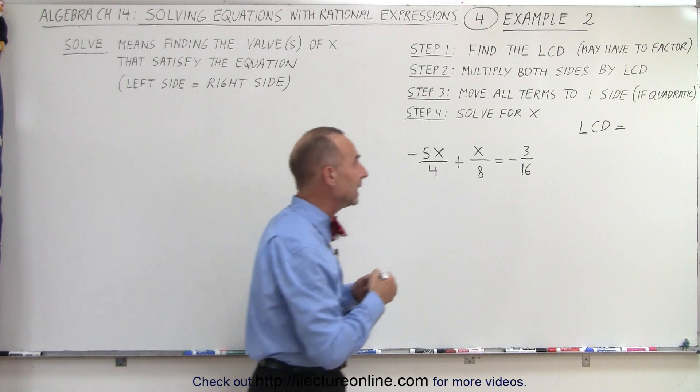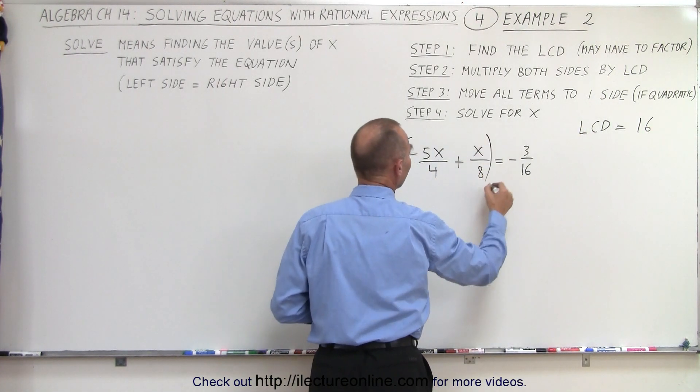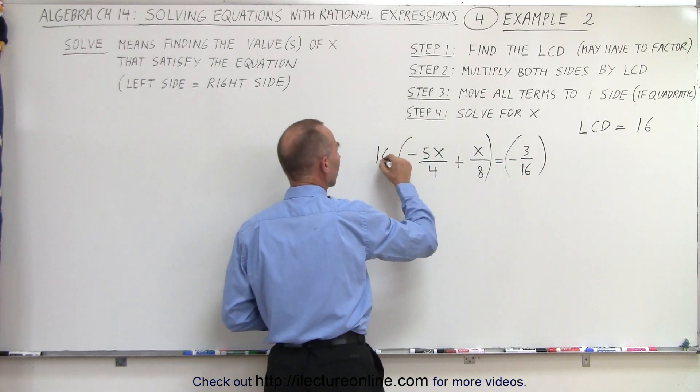so the larger one will be the LCD, which means we're going to multiply both the left side and the right side of the equation by the lowest common denominator.